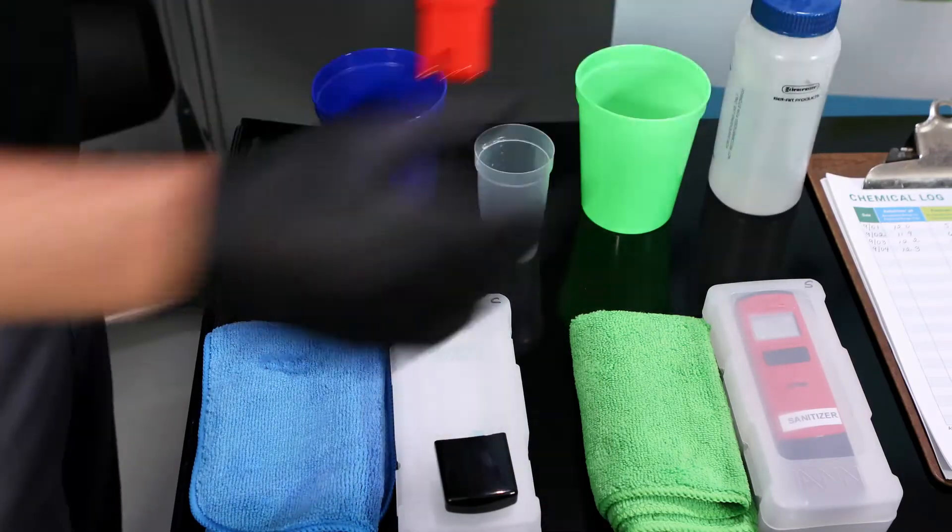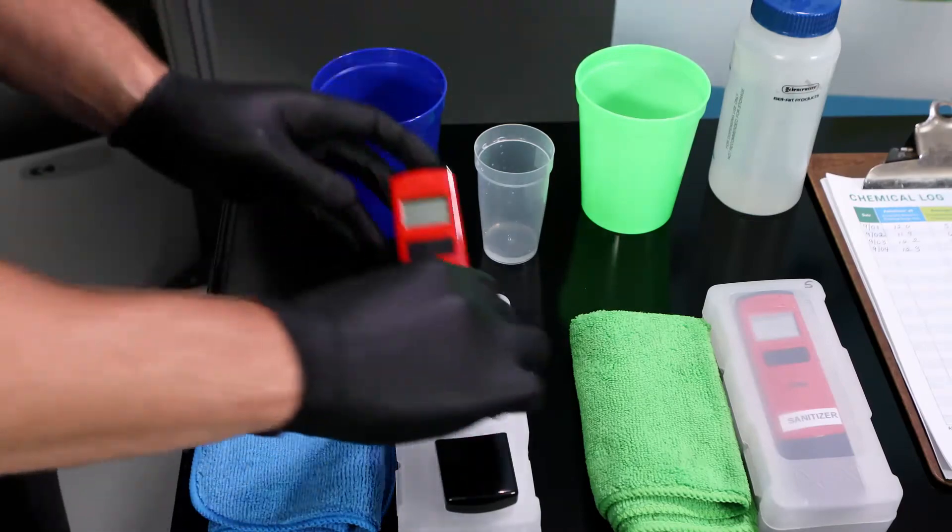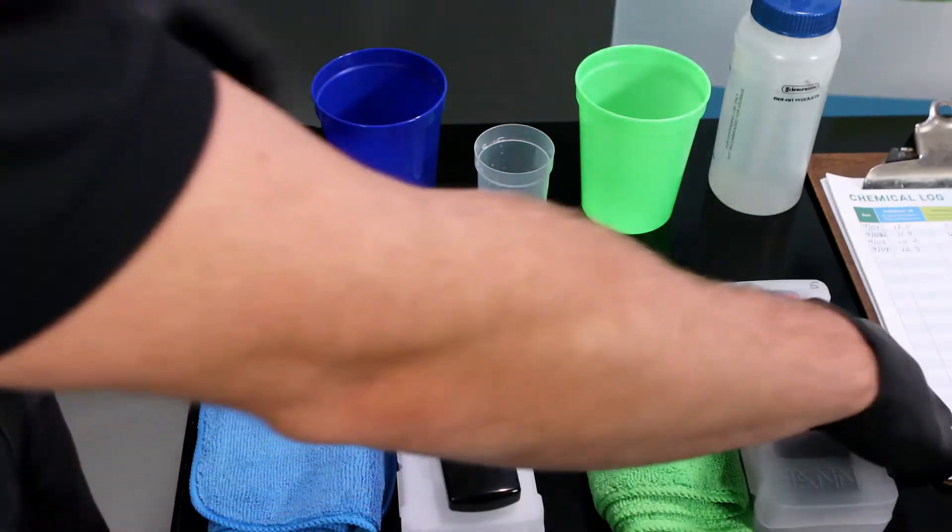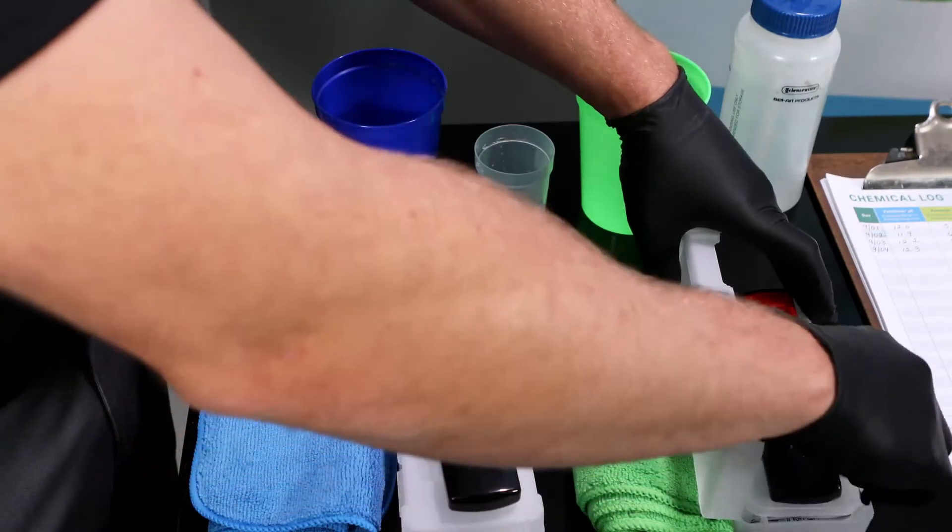Remove each meter from its case and remove the cap from the bottom of each meter. Rinse the exposed electrode with tap water and shake gently to dry or blot dry.